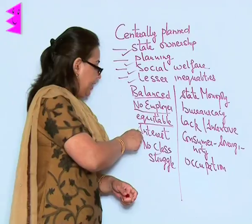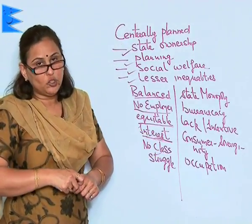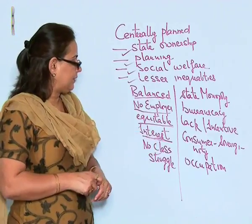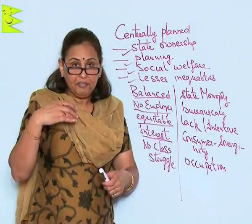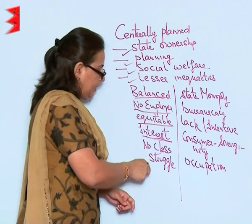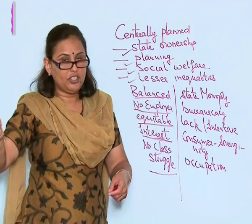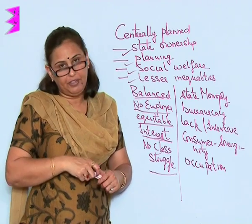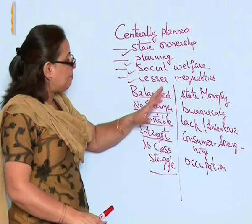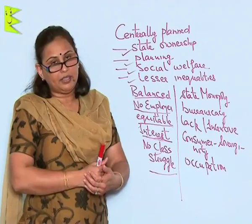The interest of the government is one — and that is social welfare. Thus the people are benefited from all angles. We hardly see any class struggle in such economies because people do not tend to become very rich or very poor. The allocation of resources remains in the hand of the government and is distributed equally amongst the people.